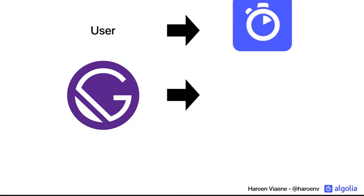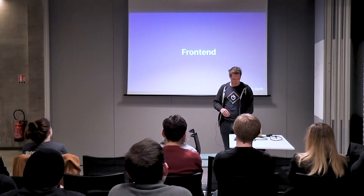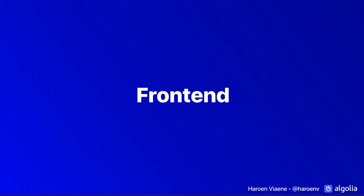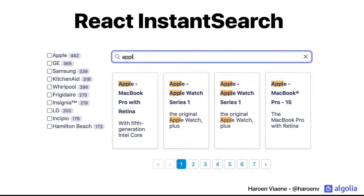The other part of search is not only making the index — it's also the frontend. A nice solution we made for searching based on an Algolia index is called React Instant Search. This is a library that allows you to make search interfaces like this one. They can look differently, but you can have a list of filters, highlighting, typo tolerance, pagination, etc. Of course, this can look however you want.